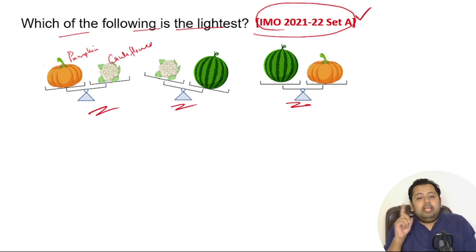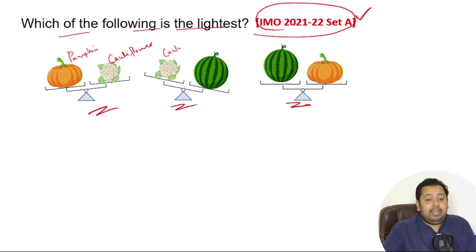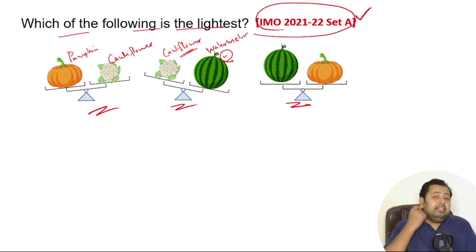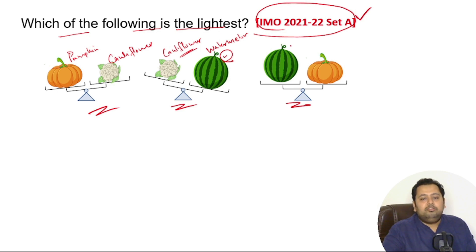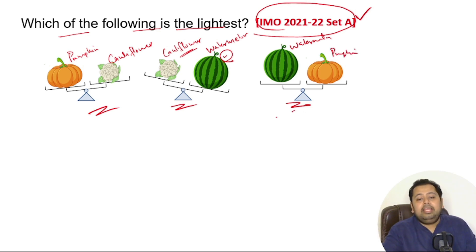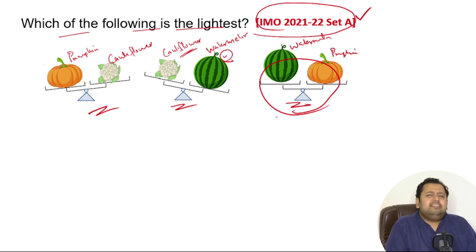Here you can see the pumpkin weighs more than the cauliflower. In the second weighing scale you see a cauliflower and a watermelon — the watermelon is heavier than the cauliflower. On the third weighing scale you see a watermelon and a pumpkin, and they are weighing equally.